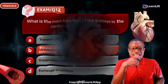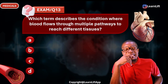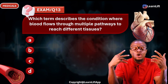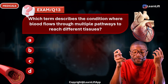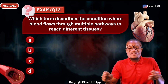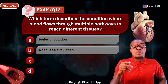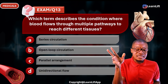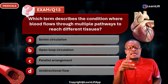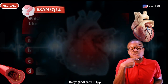Question thirteen: Which term describes the condition where blood flows through multiple pathways to reach different tissues? Option A: series circulation. Option B: open loop circulation. Option C: parallel arrangement. Option D: unidirectional flow. The correct answer is Option C — parallel arrangement, also called parallel circulation.